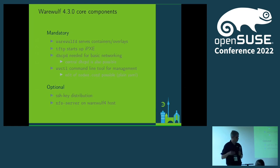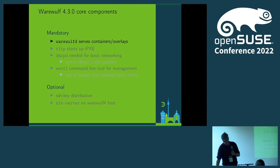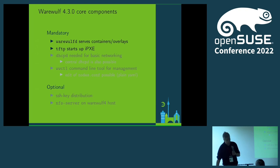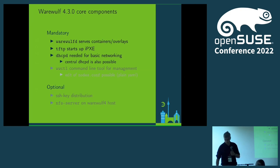Now, what components are in Warewulf 4? At the moment it's just one single service called warewulfd, which serves the containers to the nodes. The container contains the operating system — it's not an application container, it's an operating system container. You also need a TFTP server running on your master server because the whole boot process goes over iPXE. Then you need DHCPD so that you have your IP addresses mapped to the booting nodes. You can also use a central DHCP server if you're not allowed to run your own, and Warewulf can cope with that.